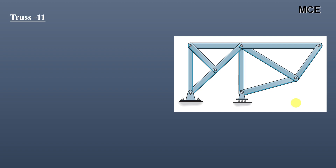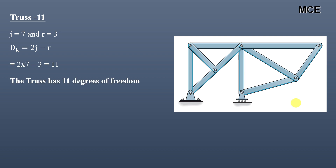For truss eleven, this truss has a total of seven joints and three support reactions. The value of dk comes out to be 11, meaning this truss has 11 degrees of freedom.